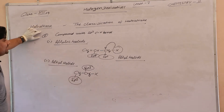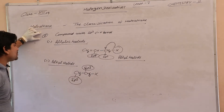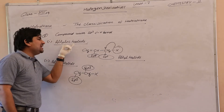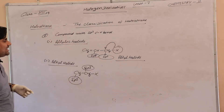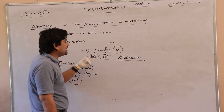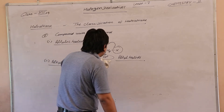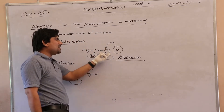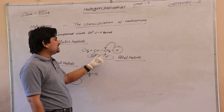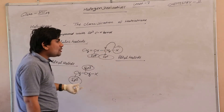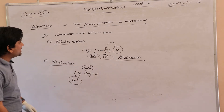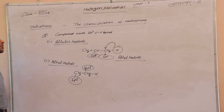Compounds with SP3 C-X bond are divided into types. The first type is allylic halide. What is allylic halide? The halogen is attached with an SP3 carbon atom, and that SP3 carbon atom is also attached with a double-bonded carbon atom. The compound is called allylic halide.